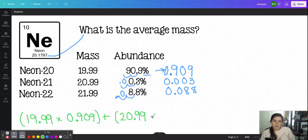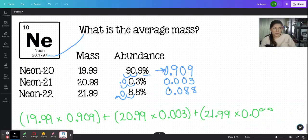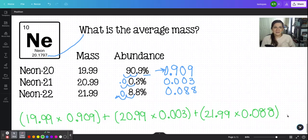20.99 times this very, very, very small amount. And then we're going to do the same 21.99 times 0.088. And then you close the parentheses. That is the correct numerical setup.